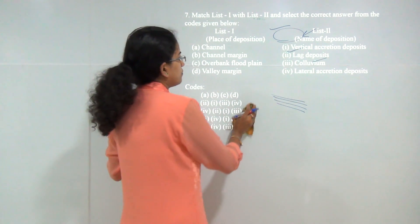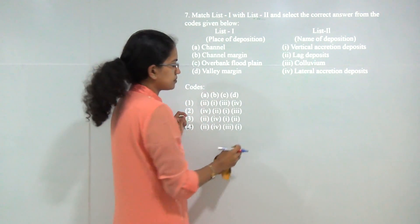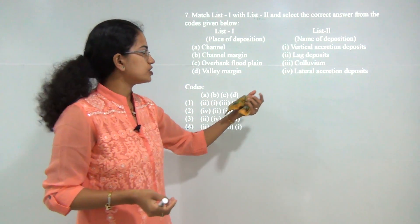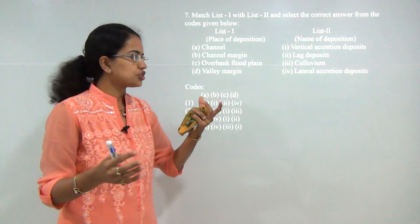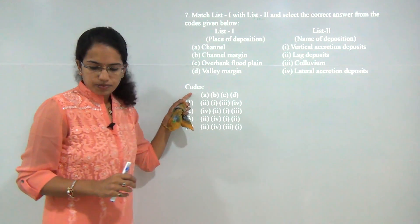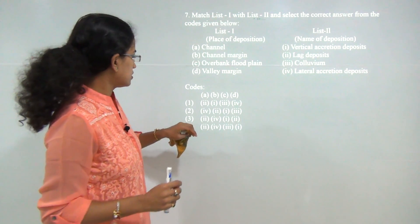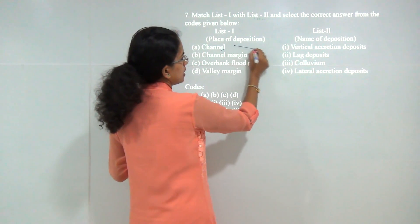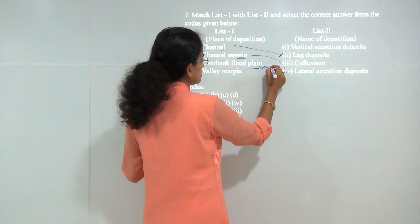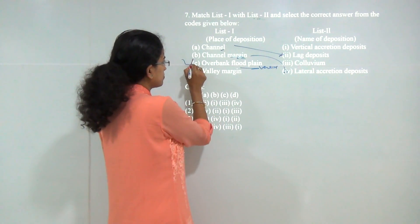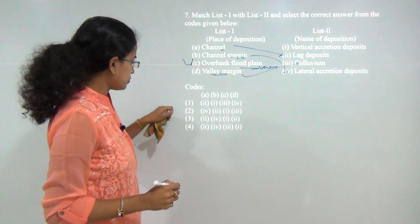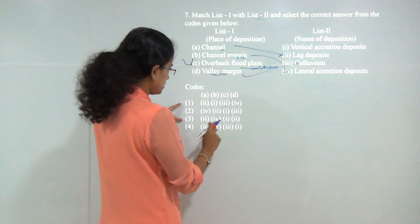Next question: we have to match the place of deposition with the name of the deposition. Colluvium is the unconcentrated slope wash, and lag deposits are accumulations of large particles. The correct matches are: channel — lag deposit; channel margins — lateral deposits; floodplains — vertical deposits, because the overbank of the floodplain would be a vertical deposit; and valley margins — colluvium. So A with 2, and the answer here would be 3.